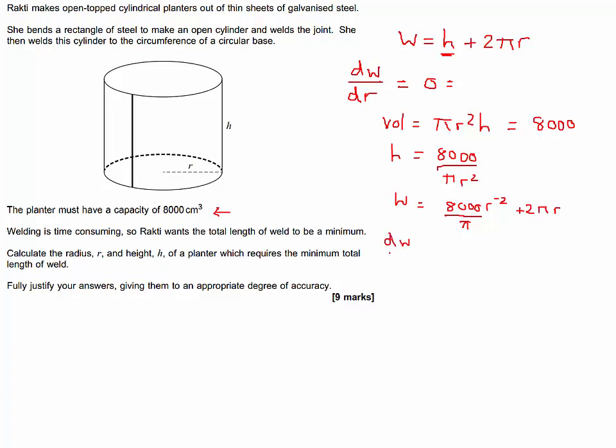So dW/dr equals minus 2 times 8000, R to the minus 3. Well I'm going to take that back down to the bottom now. It becomes R cubed at the bottom doesn't it? And then 2 pi R is just going to differentiate to 2 pi.